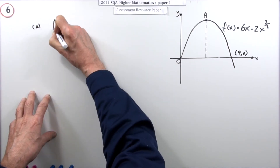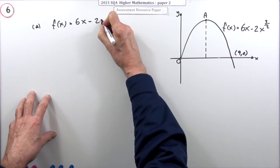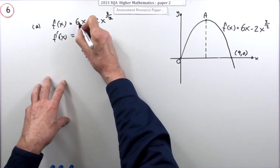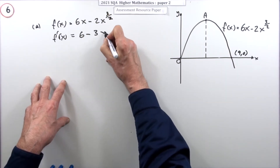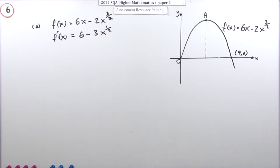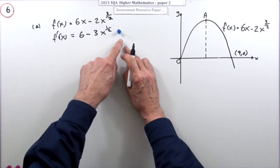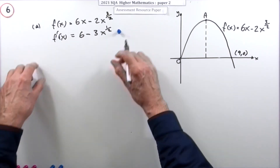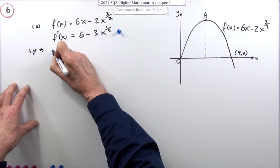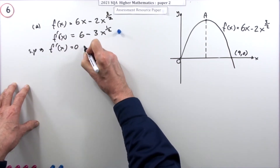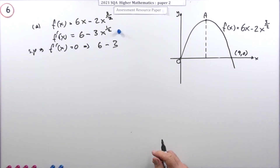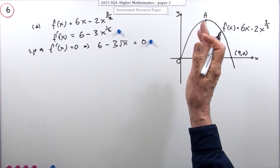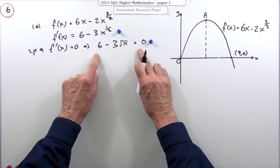For the first part, the function is 6x minus 2x to the power 3/2. Differentiating: the first term gives 6. For the second term, multiply by the power — the 2s cancel — giving 3 times x to the power 1/2. That's the first mark. The second mark is for equating the derivative to zero, since the stationary point means the derivative equals zero.